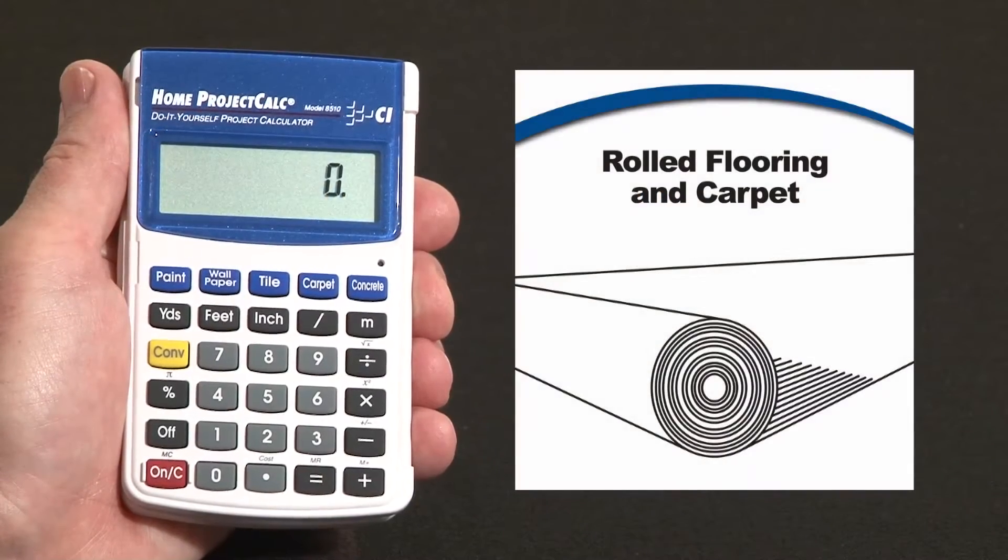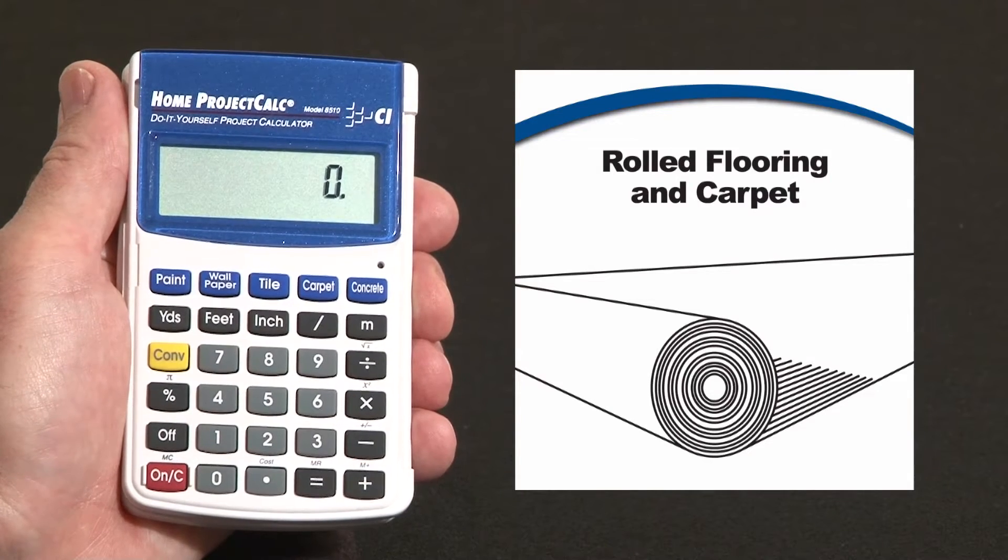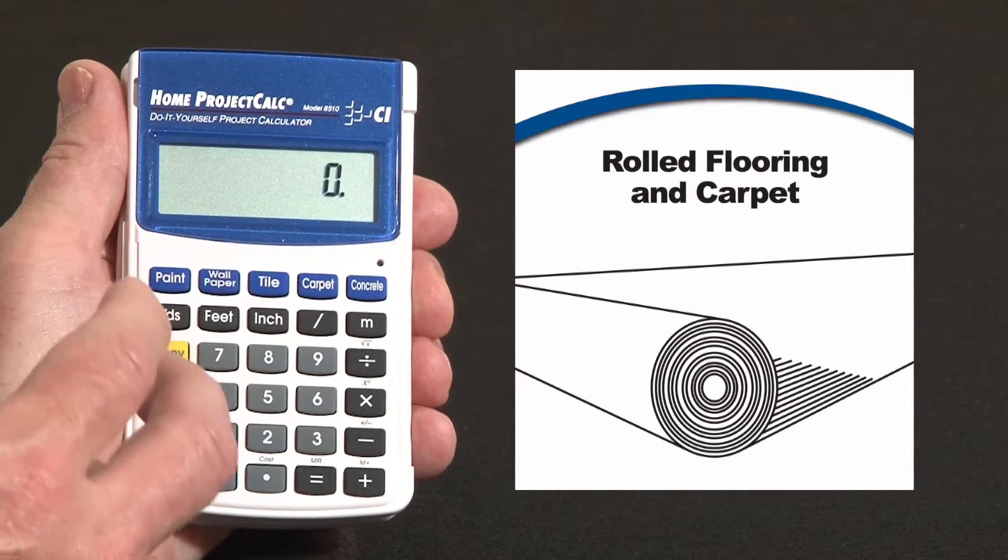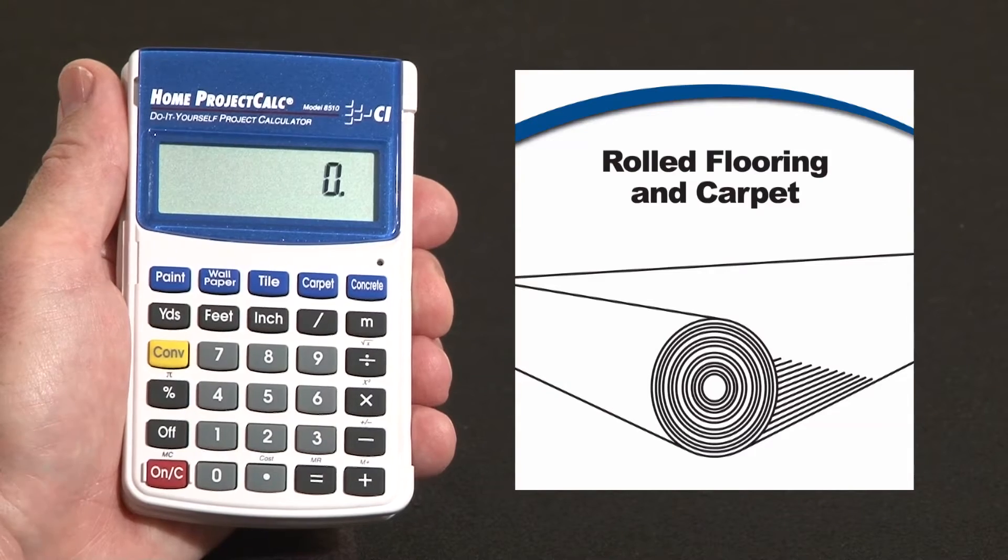Now let me show you how to use your Home Project Calc's built-in carpet function to determine how many lineal feet of carpet, linoleum, or any rolled flooring you need in three common roll widths. It's all based on the total square footage of your floor and the various widths of the rolls.